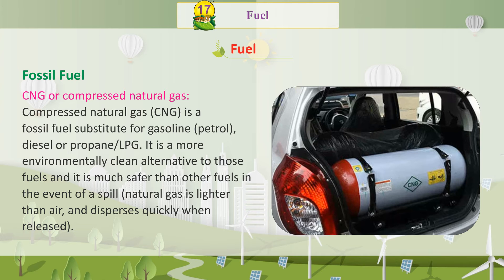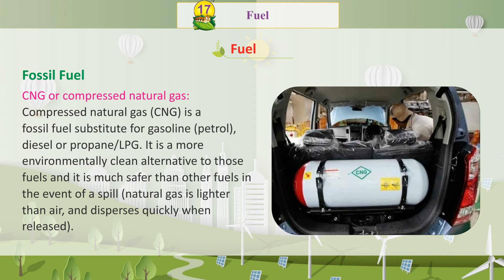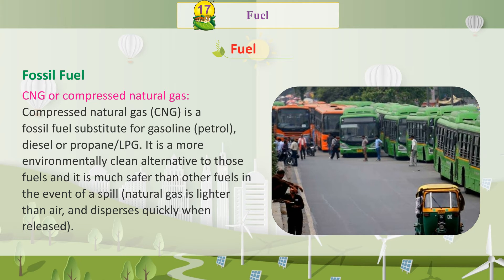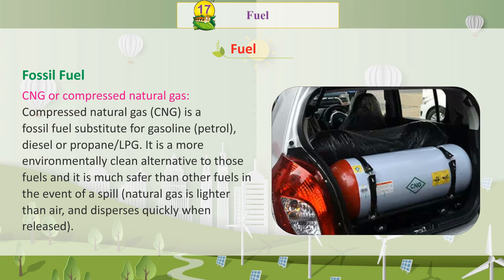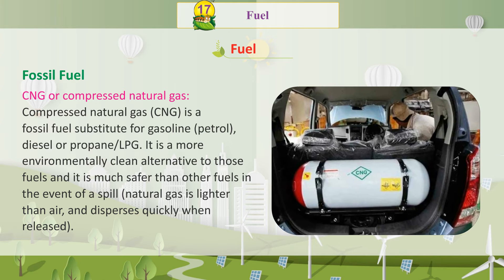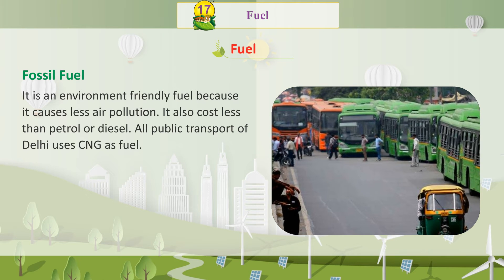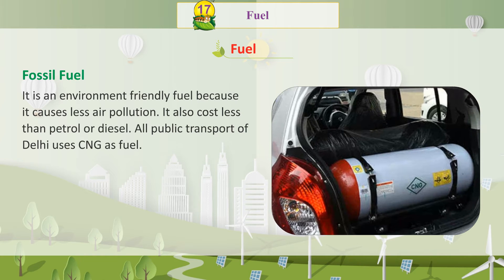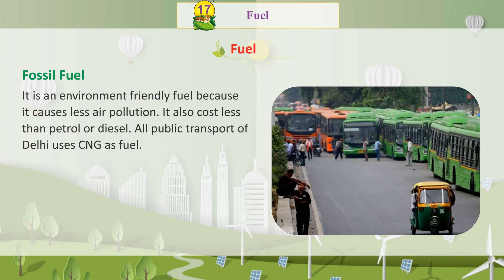CNG or Compressed Natural Gas is a fossil fuel substitute for gasoline, petrol, diesel, or propane/LPG. It is a more environmentally clean alternative to those fuels and is much safer than other fuels in the event of a spill. Natural gas is lighter than air and disperses quickly when released. It is an environment-friendly fuel because it causes less air pollution. It also costs less than petrol or diesel. All public transport of Delhi uses CNG as fuel.